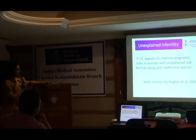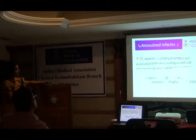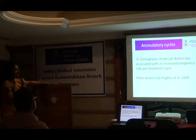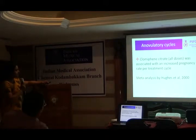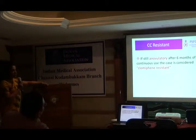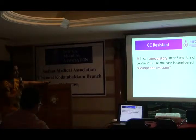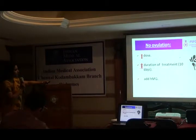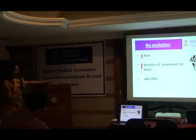This was shown with 17 trials of meta-analysis by Tukes in 2000. In some patients who have anovulation, clomiphene citrate in all doses is associated with increased pregnancy rates. When the patient is actually resistant to clomiphene citrate — you are giving her 6 months of continual use and still she is not ovulating — then you know you have to change the drug: either increase the dose, increase the duration, or add HMG.